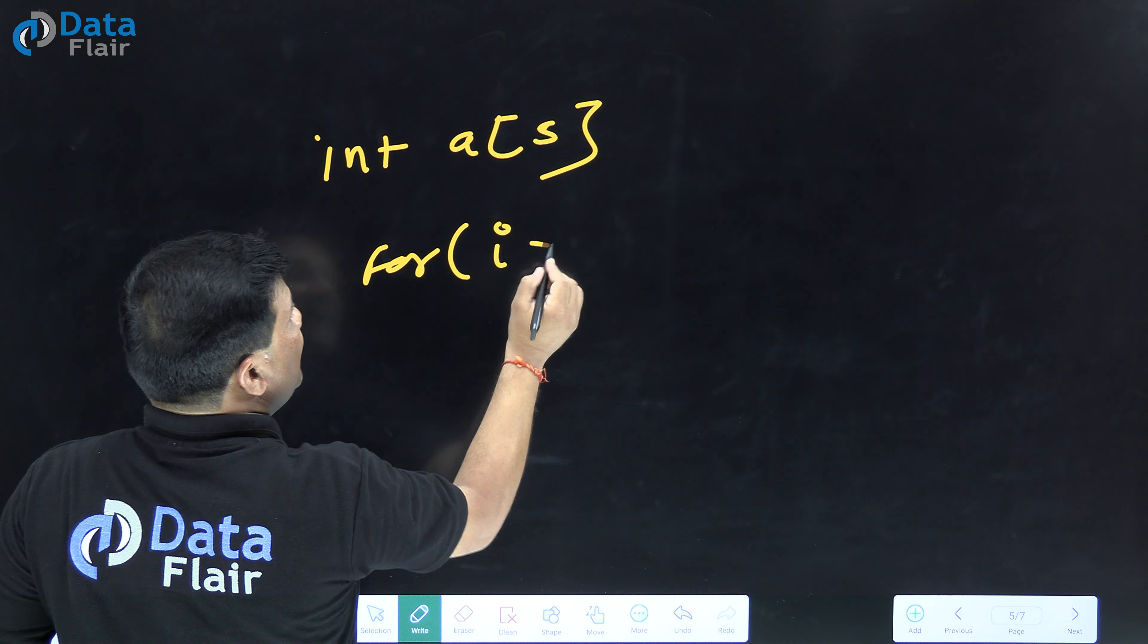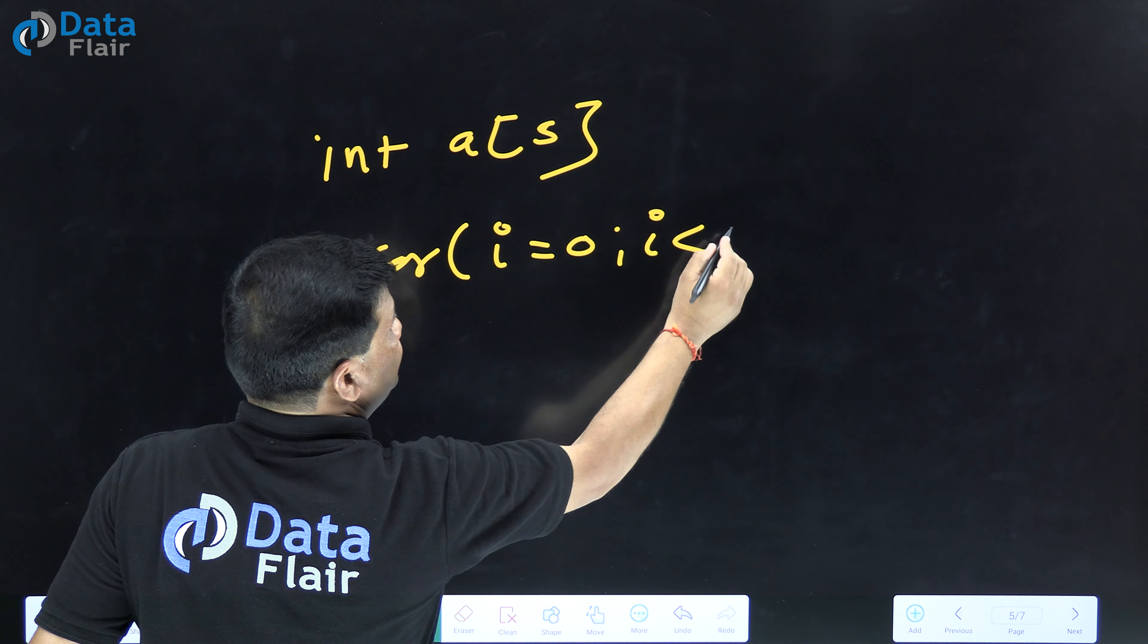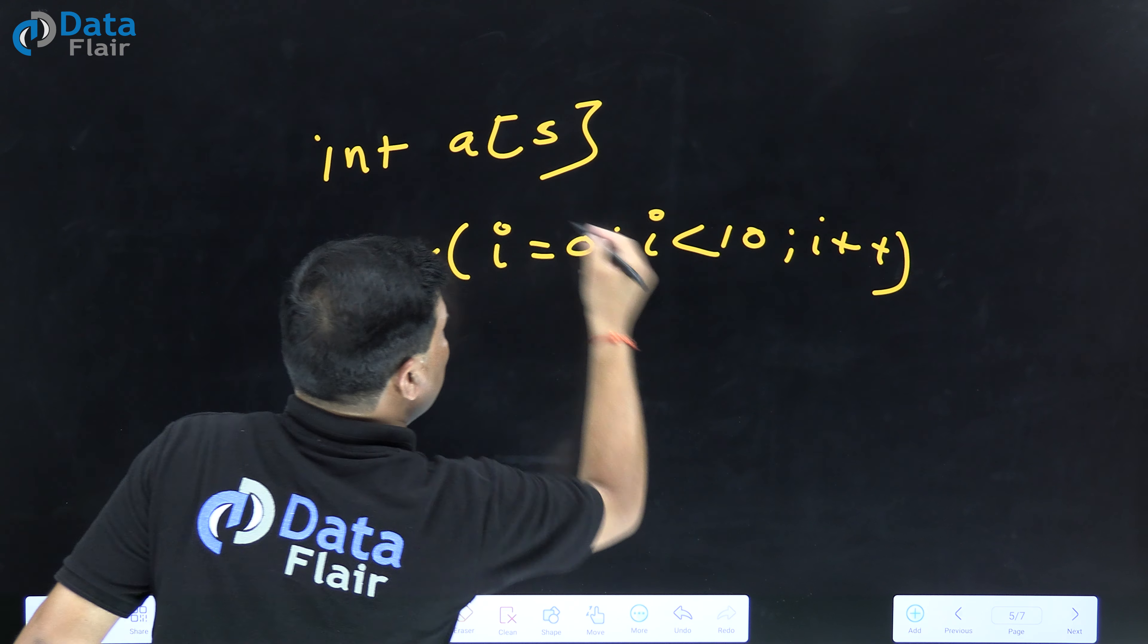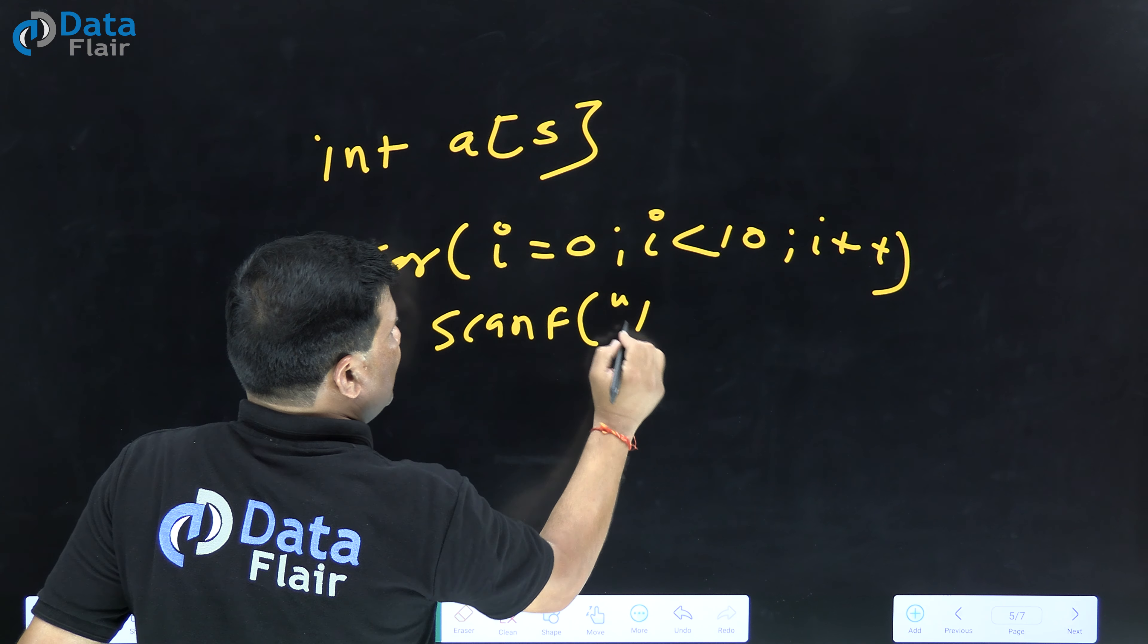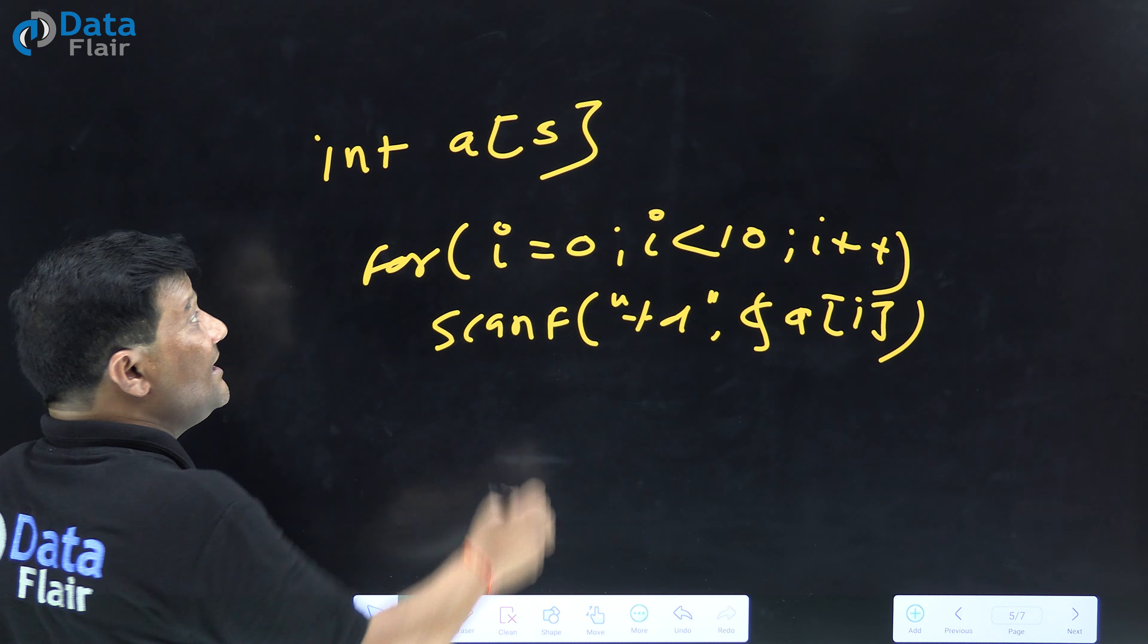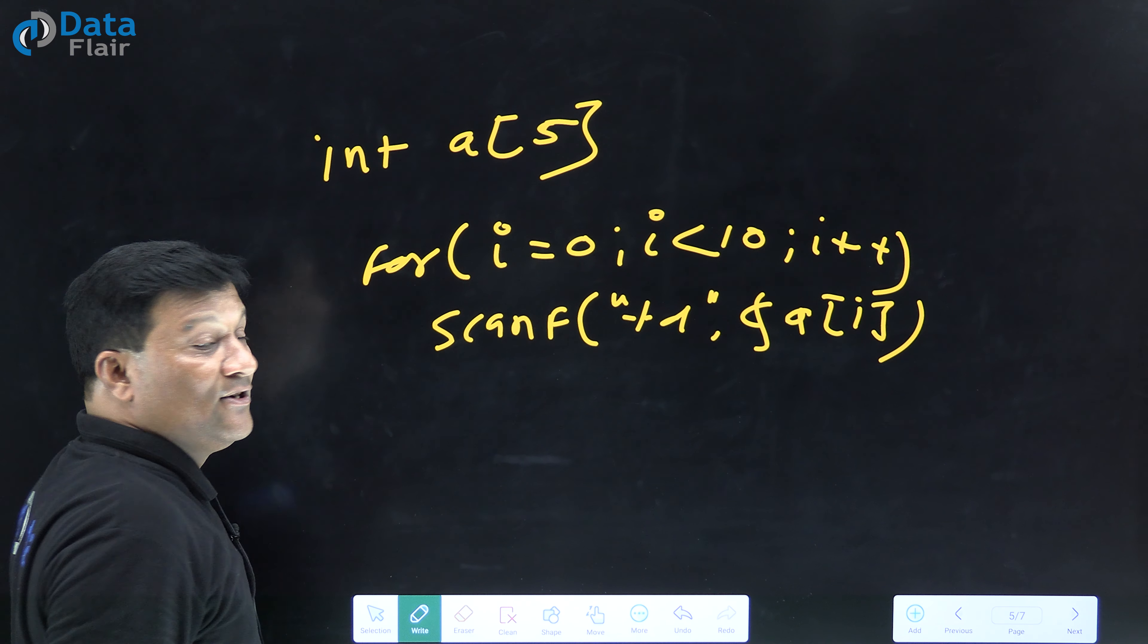And you run a loop where you enter elements one by one. There is no error at compile time. If you enter elements into the array using scanf, you give scanf percentage d to enter integer values.